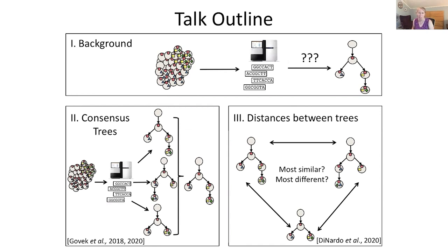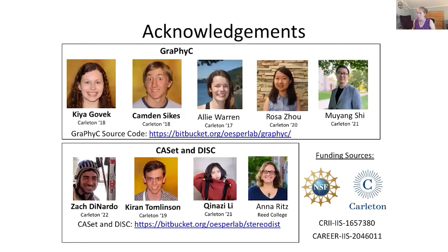In conclusion, I spent time today talking about tumor evolution and how we infer it from sequencing data, covering two general areas: using consensus across different tumor evolutionary trees, and how we compare or design distance measures between those trees. These projects are the work of many people — I work primarily with undergraduates, so all of this work was done by undergraduates. I want to call out Kaya and Camden, who led the GRAPHC approach, and Zach and Kieran, who led CASSET and DISC, along with collaborator Anna Ritz. Thanks also to Carleton and the National Science Foundation for funding. I'm delighted to answer any questions.